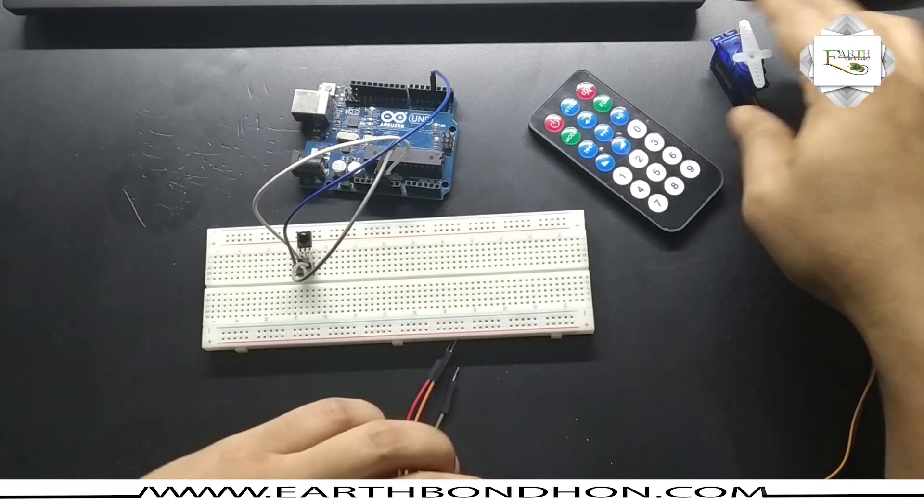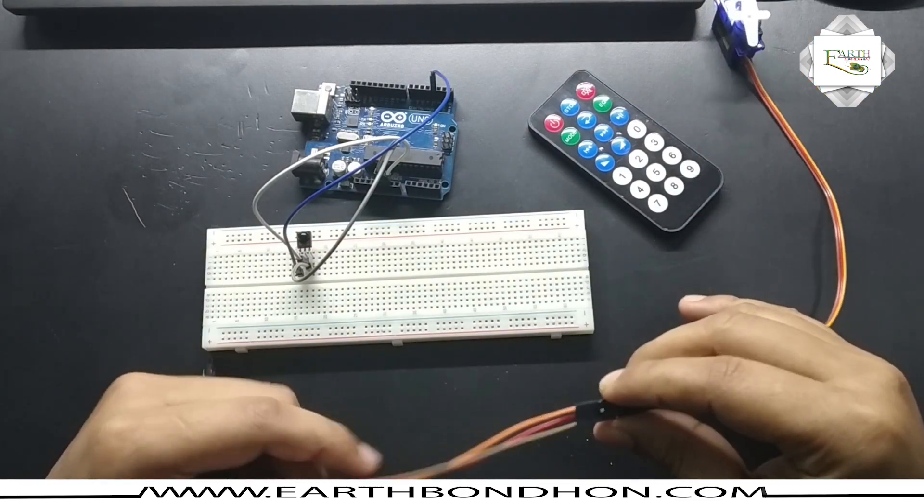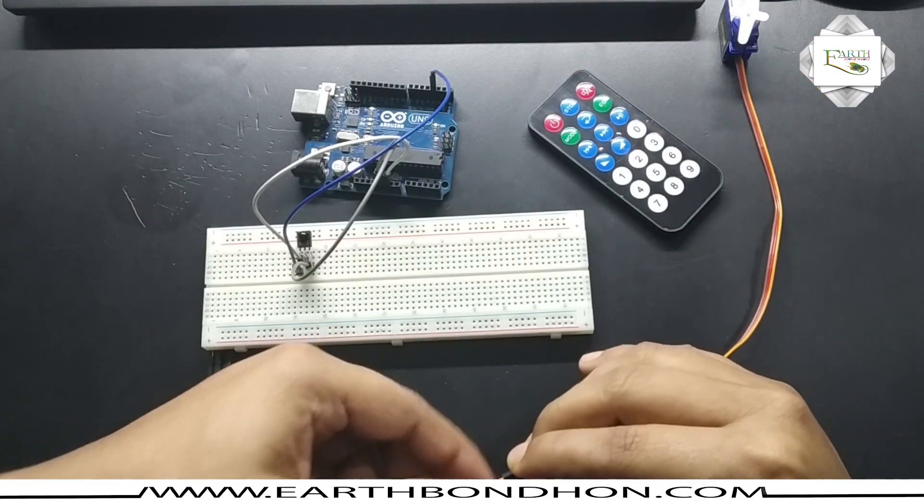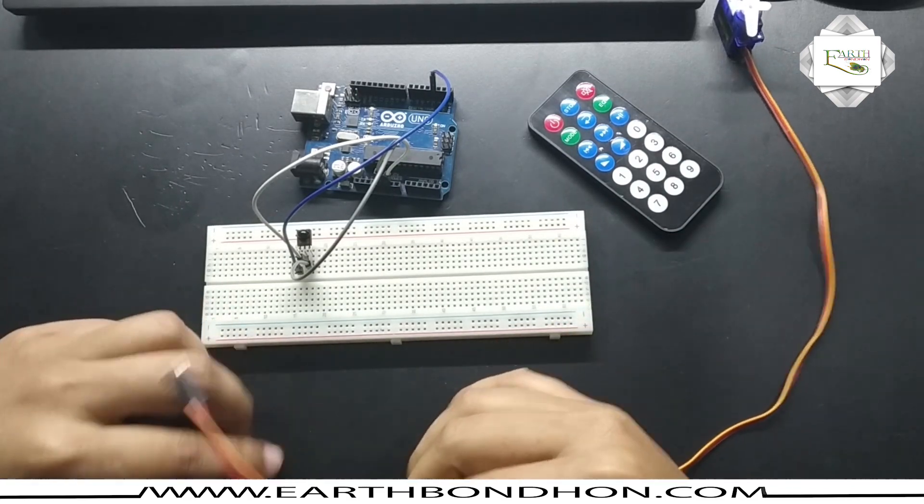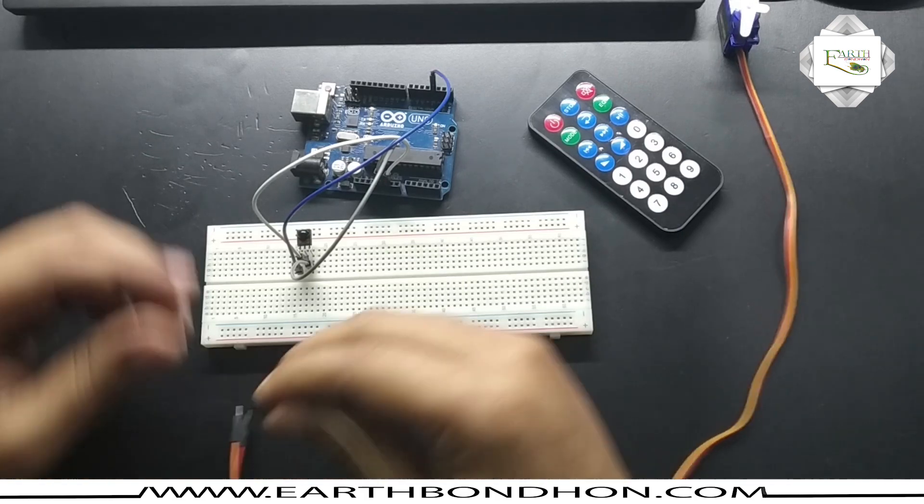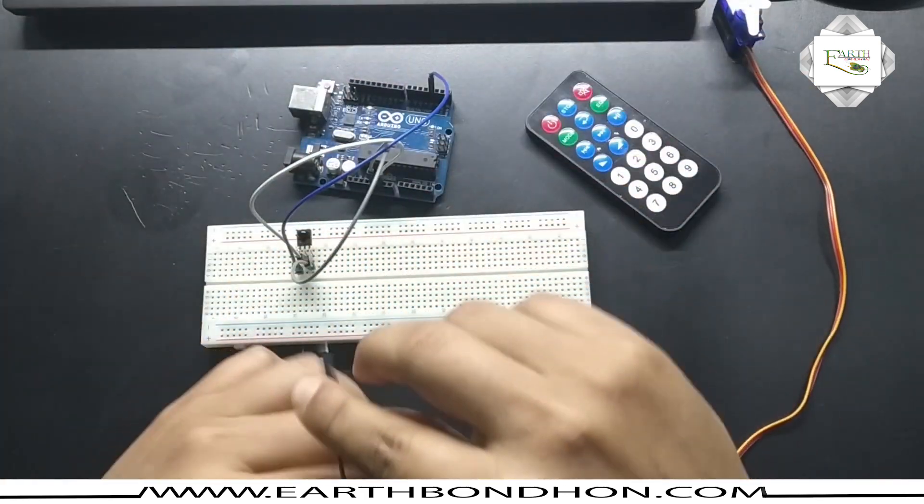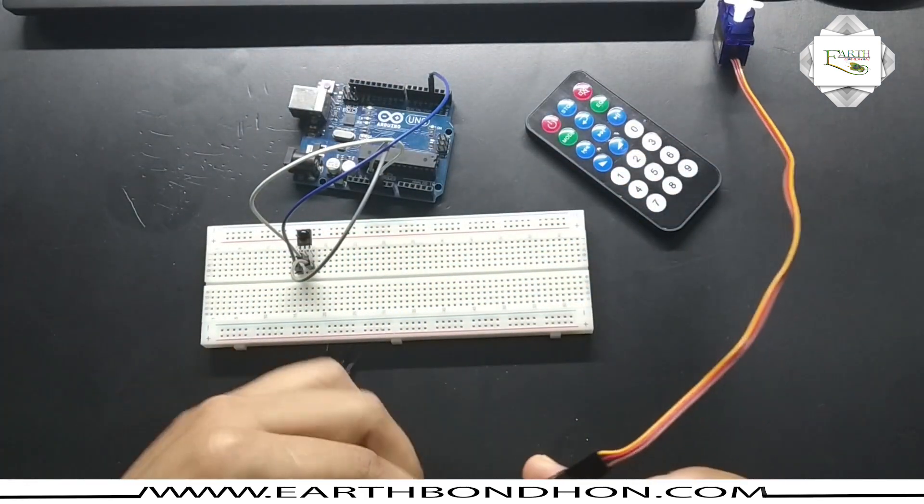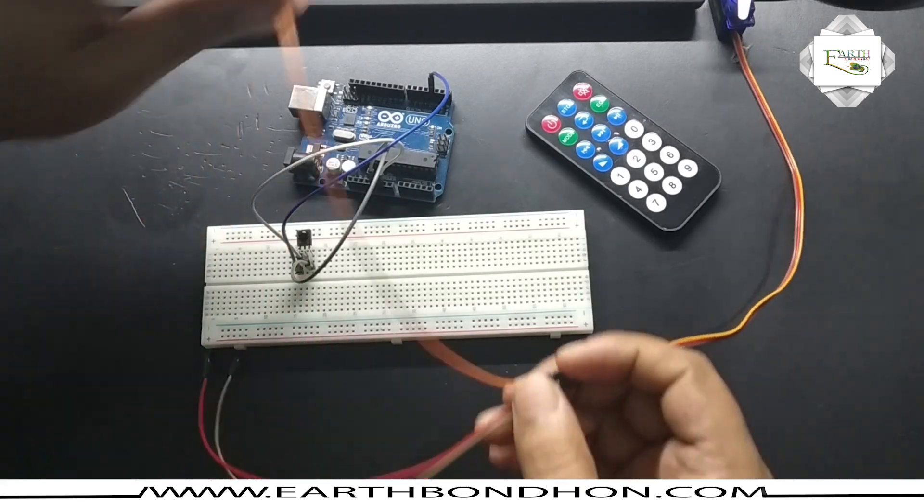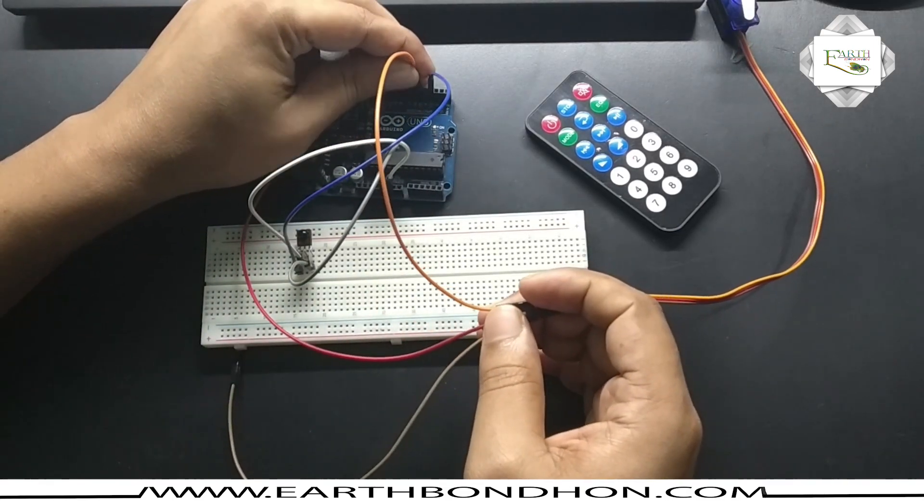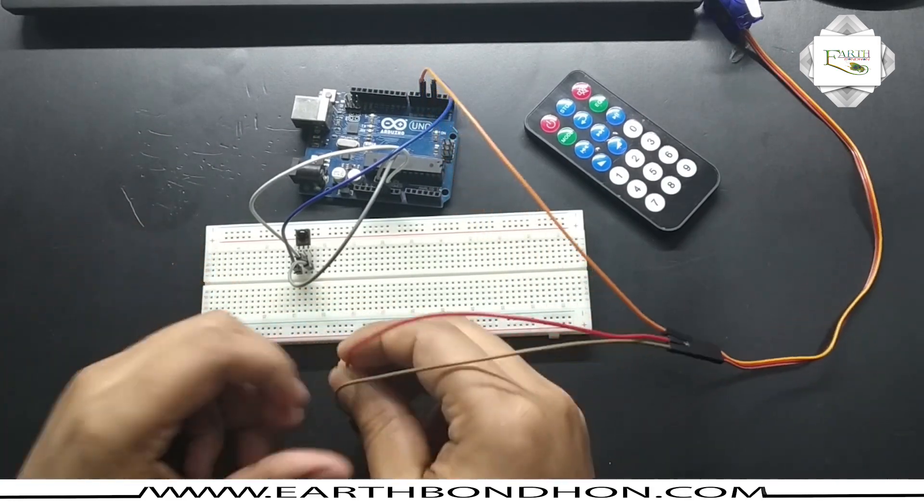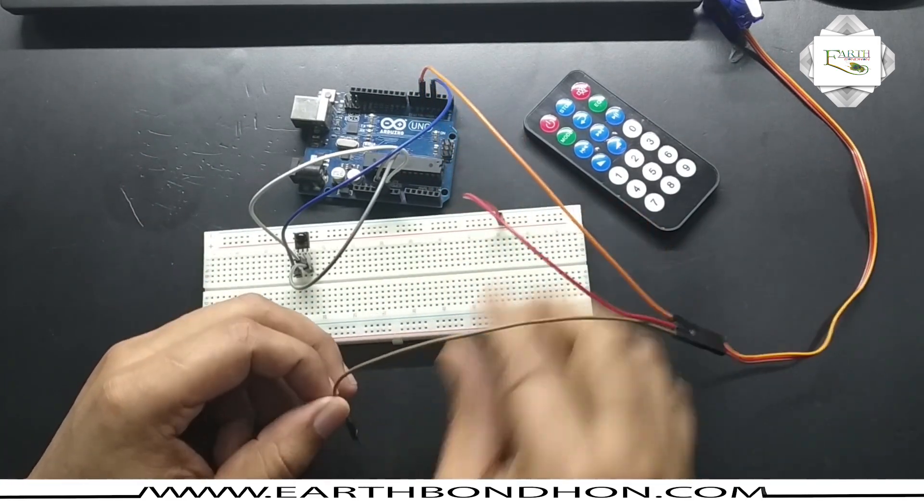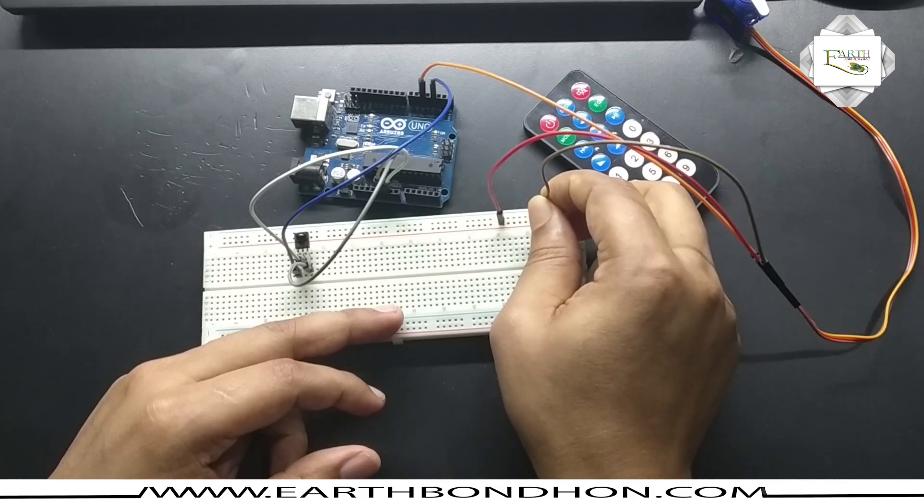This is the servo motor, which has three terminals: VCC, ground, and input signal. The input signal connects to digital pin number five. So we have input on digital pin five, plus VCC and ground.